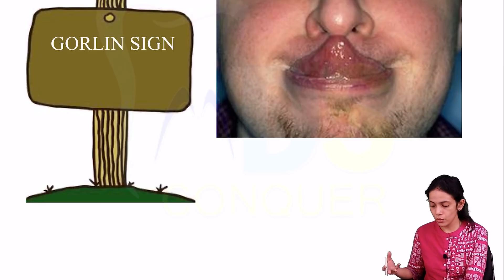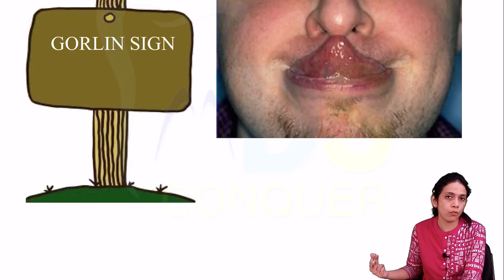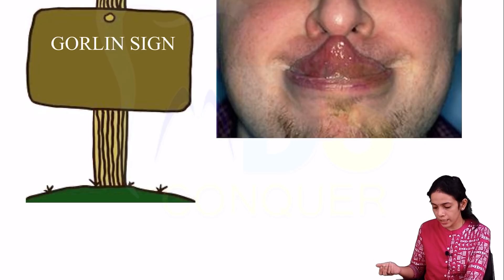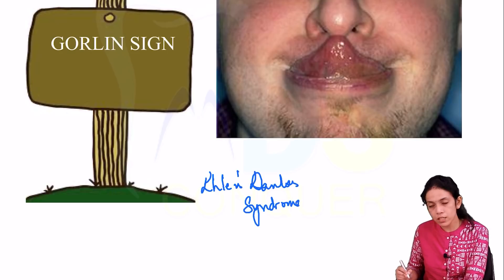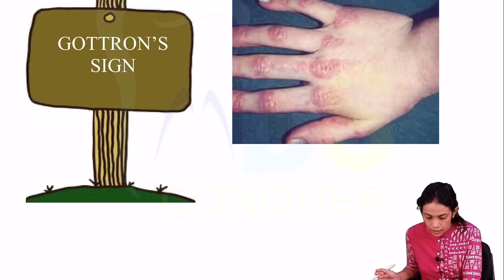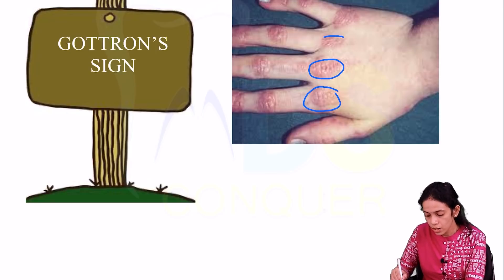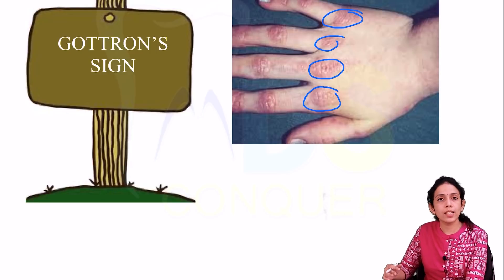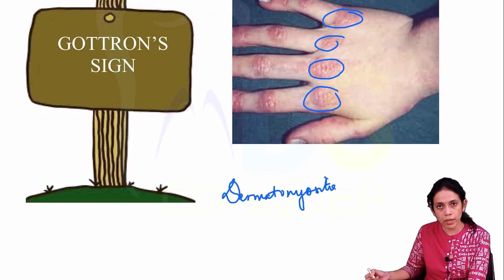Next is the Gorlin sign — the ability of the patient to touch the tip of their nose with the tip of their tongue due to joint hyperlaxity, seen with Ehlers-Danlos syndrome. Next is the Gottron sign, where erythematous, sometimes scaly rashes are seen over the joints on the fingers, seen with dermatomyositis.